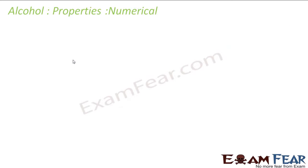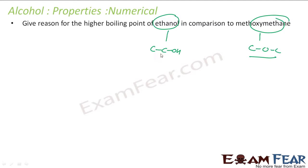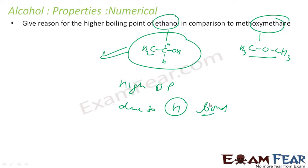The question is: why does ethanol have a higher boiling point compared to methoxymethane? Both have the same molecular mass. We have established that when molecular mass is the same, alcohol will have a higher boiling point because of hydrogen bonding. Ethanol will participate in hydrogen bonding but methoxymethane will not. So ethanol has a higher boiling point.